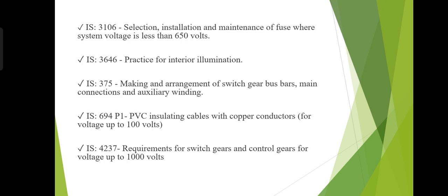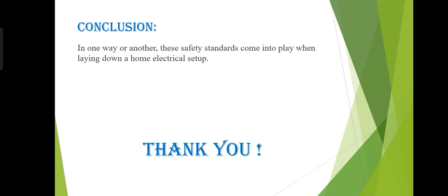IEA 375 covers marking and arrangement of switchgear busbars, main connections, and auxiliary wiring. IEA 694 covers PVC insulating cables with copper conductors for voltage up to 100 volts. IEA 4237 covers requirements for switchgears and control gears up to a voltage of 1000 volts.